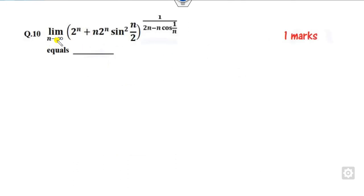When n approaches infinity, you first have to check which terms are finite. 2 raised to power infinity is not finite. This is not finite. This value is finite because it lies between minus 1 and plus 1. This is infinite. This value is finite.